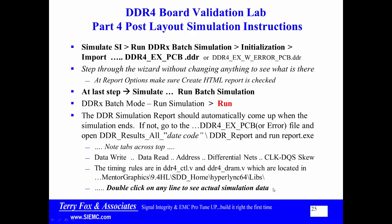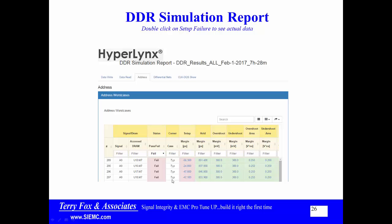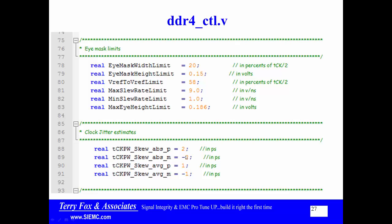To see the actual data, if you saw Address 9 with an error in the setup time, just double-click on that error and it will take you to the actual simulation waveforms. In the report, the tabs are: Data Write, Data Read, Address, Differential Nets, Clock Skew. On the Address tab, it shows failures with the time they occurred — there may be a first, second, and third failure. Double-clicking on any failure takes you to the exact waveforms.